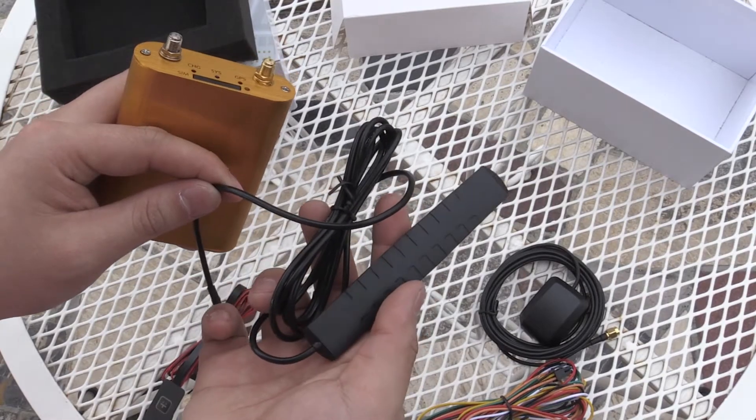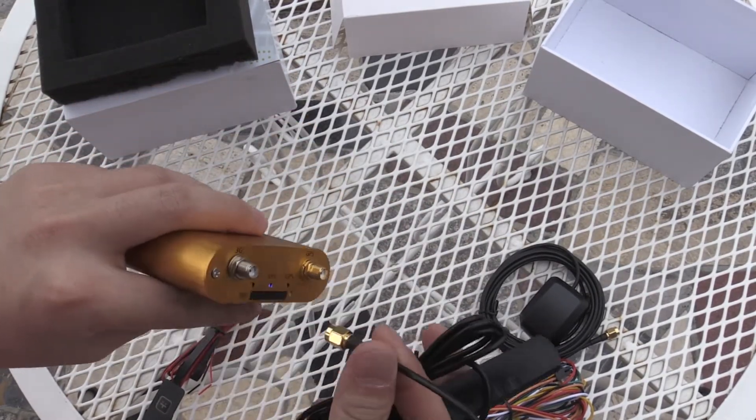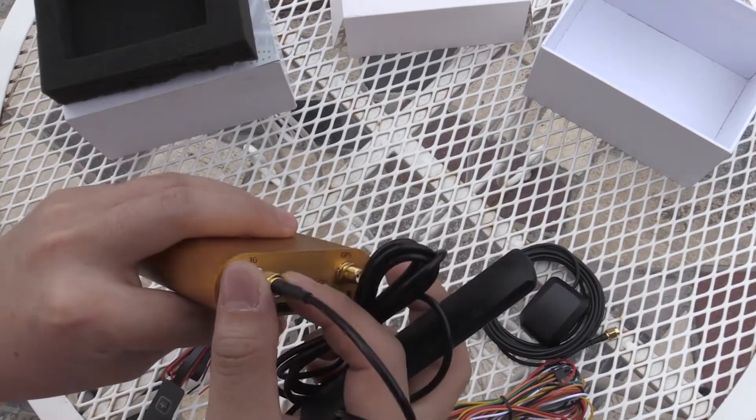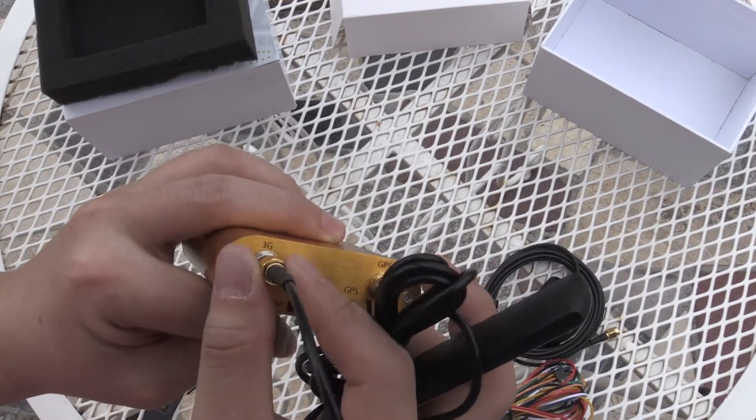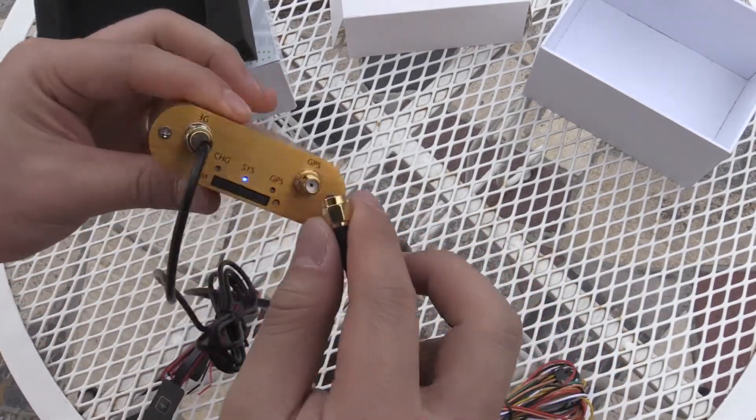Two, install the 3G GPS antenna. Connect the 3G antenna to the connector which is labeled 3G. Connect the GPS antenna to the connector which is labeled GPS.